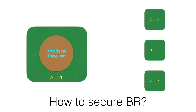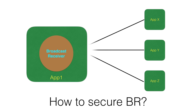However, the problem with this scenario is any app which knows the action and the category value to trigger that broadcast receiver can trigger it. What if you don't want this to happen? You want to secure your broadcast receiver so that any random app cannot trigger that particular broadcast receiver.